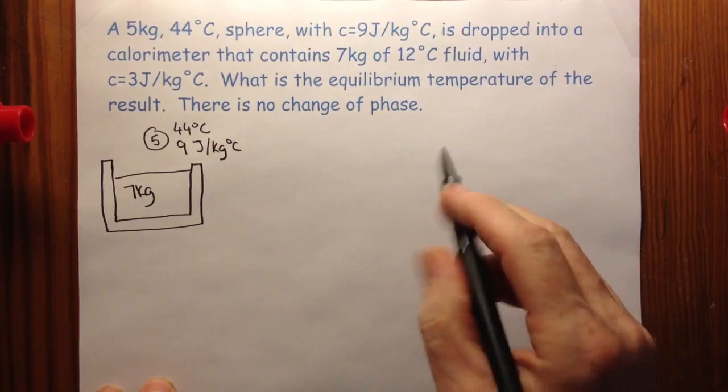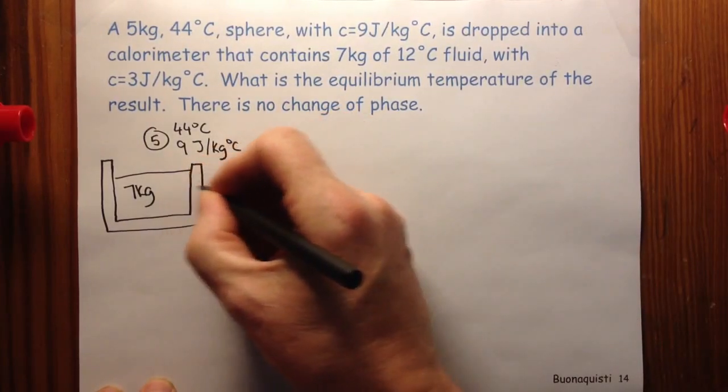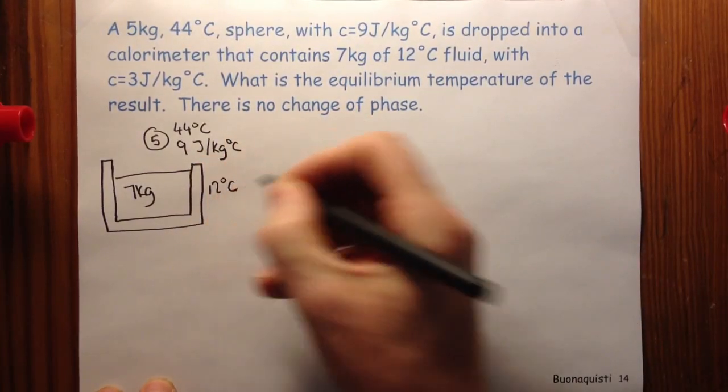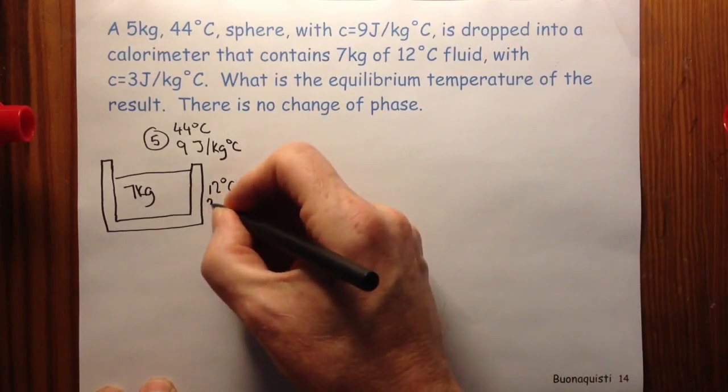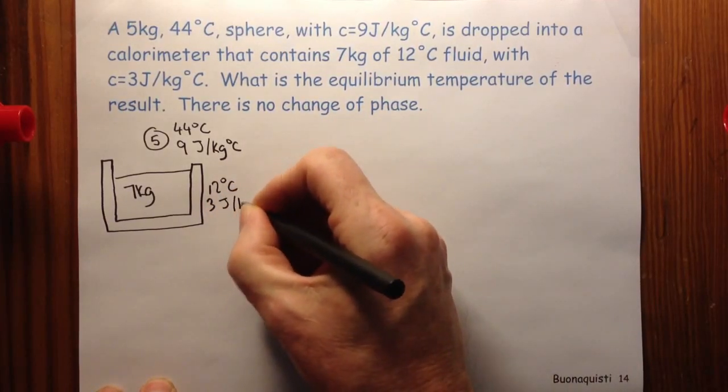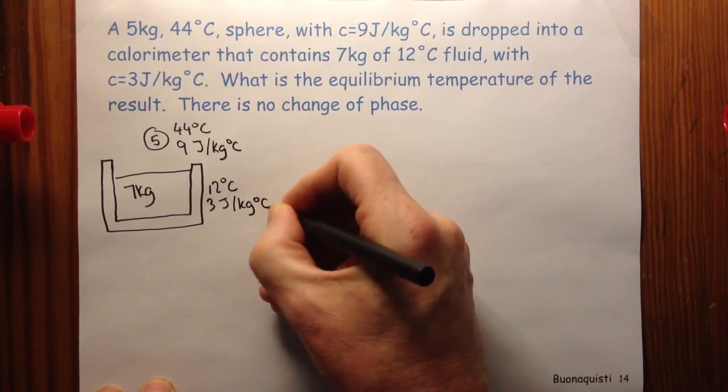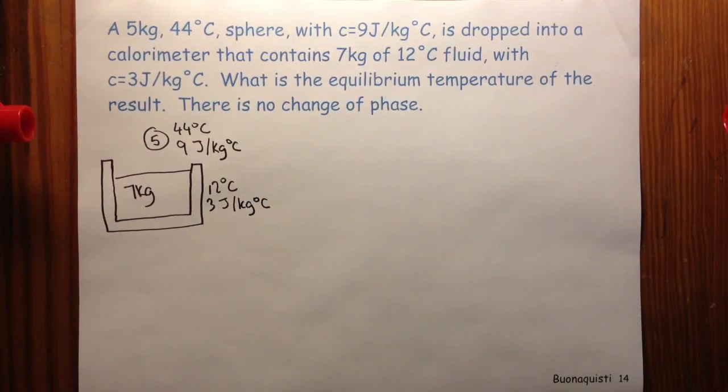And the liquid is at 12 degrees C and the specific heat for the liquid is 3 joules per kilogram degree C.